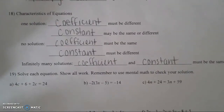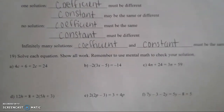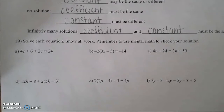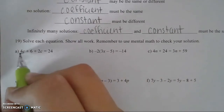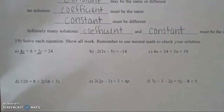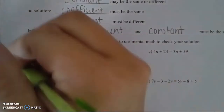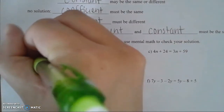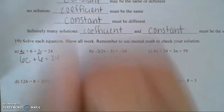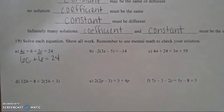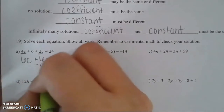Let's go ahead and solve the equations. For the first one, I can see like terms I can combine. Since they're on the same side of the equal sign I can add them normally — 4c plus 2c gives me 6c, and the plus 6 drops down, equal to 24. Now we just have a basic two-step equation, so the first step is to subtract 6 on both sides.